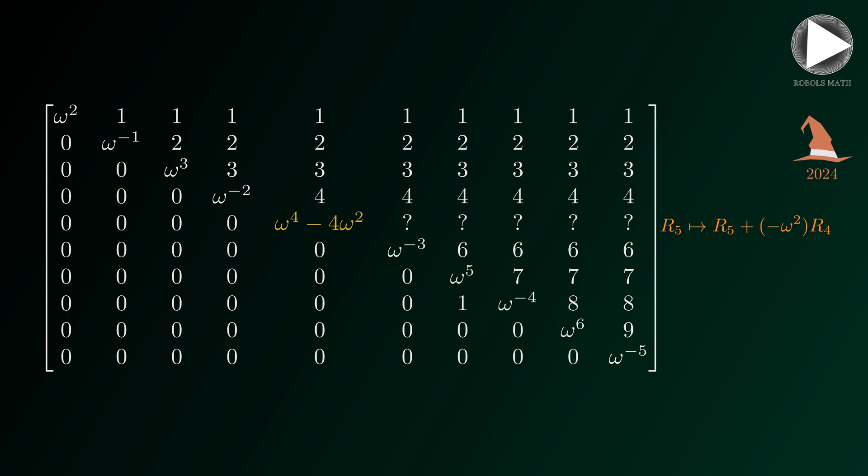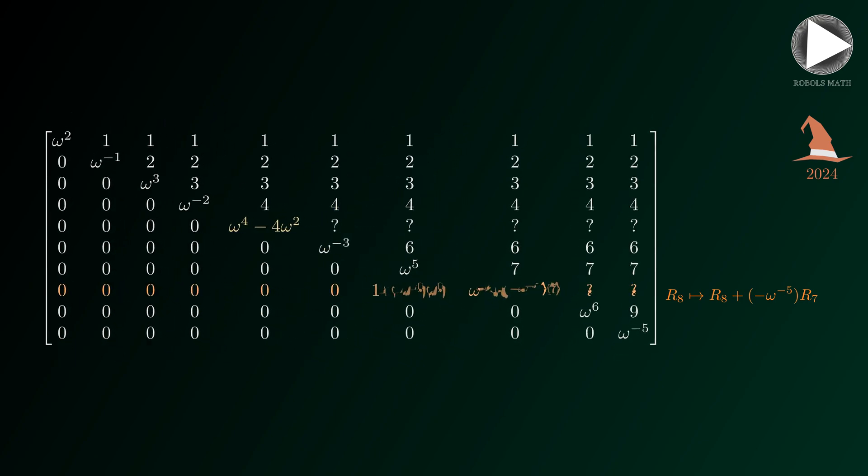We do a similar step to eliminate the one in the eighth row. This time, we add to the eighth row the negative omega to the negative five times the seventh row.